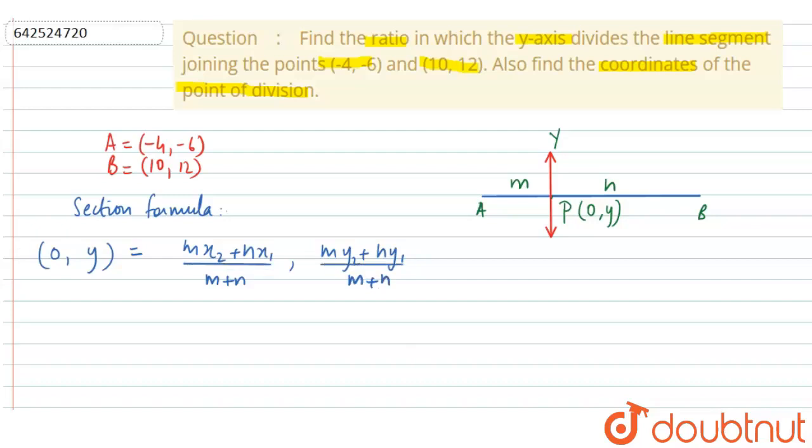So here A's coordinates are (x1, y1), and B's coordinates are (x2, y2), right? So substituting, we get (0, y) is equal to (10M - 4N) divided by (M + N), (12M - 6N) divided by (M + N).